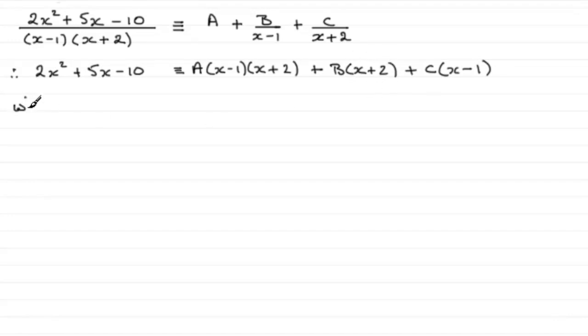So if we say when x is 1, then on the left here we're therefore going to have 2 plus 5 minus 10. And that now becomes equal to—notice how I've changed the identical sign to an equals for this because we're working out a particular value. This term goes because this is 0. This term goes because this factor here becomes 0. And we've got 1 plus 2 which is 3, so we end up with 3b.